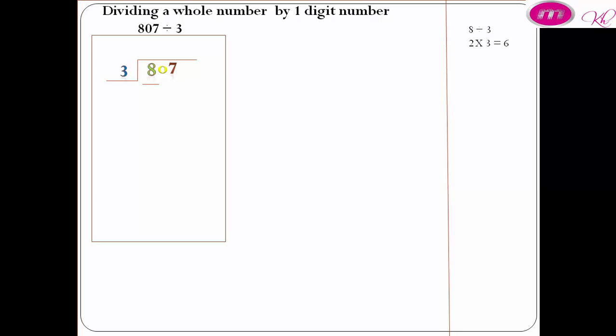2 times 3 equals 6. 2 above 8. 2 times 3 equals 6. 8 minus 6 equals 2. 2 is less than 3, so we are in the right way.